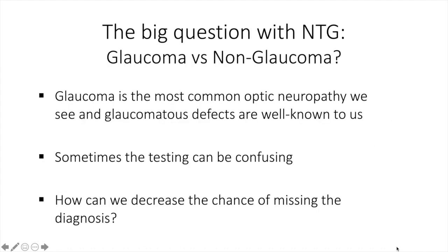The big question with NTG or LTG is often about the presence or absence of glaucoma — is this a glaucomatous process, meaning LTG, or is it a non-glaucomatous process, meaning something that could be both sight-threatening as well as life-threatening that is mimicking glaucoma? Glaucoma is the most common optic neuropathy we see, and glaucomatous defects are well known to us. Sometimes the testing can be confusing, and the question is, how can we decrease the chance of missing the diagnosis?